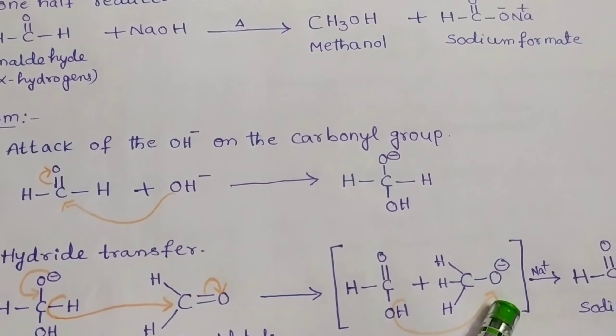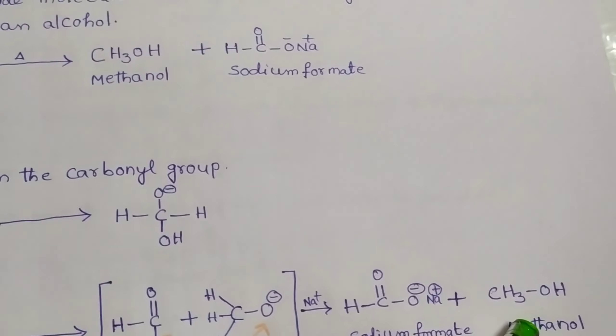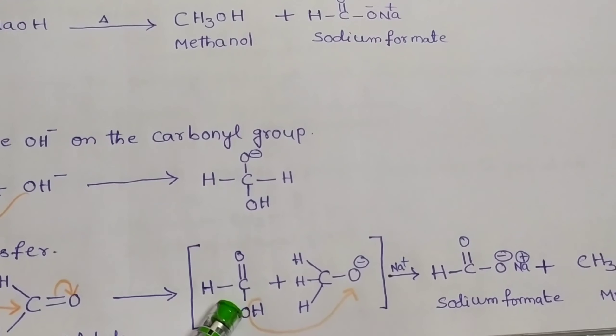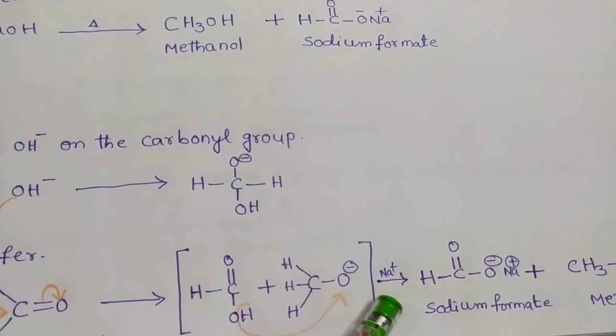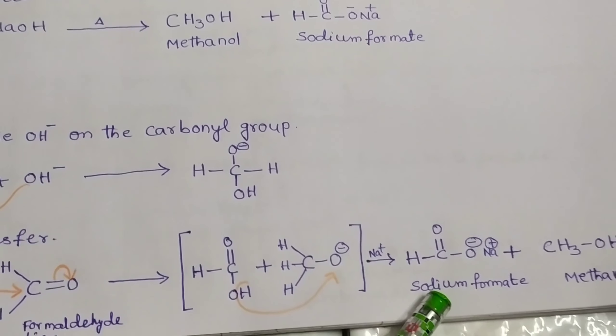Here again the hydride H plus ion shifts to CH3O minus ion, forms methanol, and HCOO minus ion reacted with Na plus ion forms sodium formate. In this way,